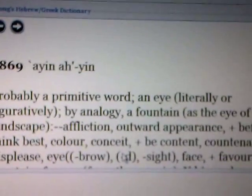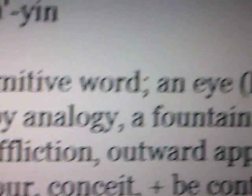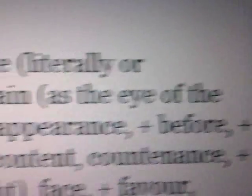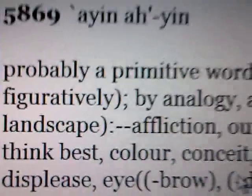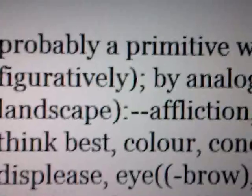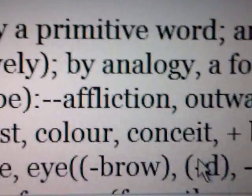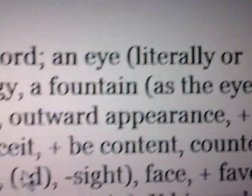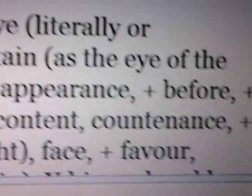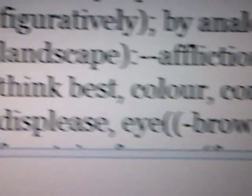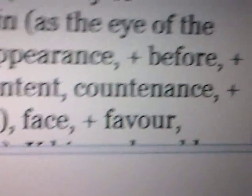And in a figurative sense, in a kind of word picture sense as we find it right here, it's an eye. But let's go on with the definition and the revelation that it's not 'their resemblance' as the King James Version has it, but it really should be 'their oin,' their eye. Now, when you look up all the meanings related to this word oin or eye, you get to find out that it's by analogy a fountain — as the eye of the landscape. So a fountain is the eye of the landscape, and the eye can cry and the eye also brings forth water. It says next: affliction, outward appearance, then before, think, best, color, conceit, be content, countenance, displease, eye, eyebrow, sight, face, favor.